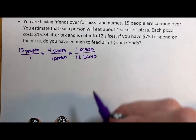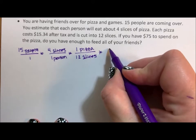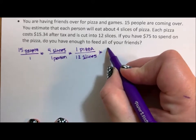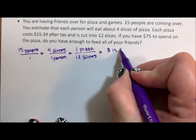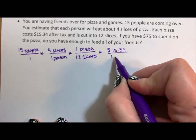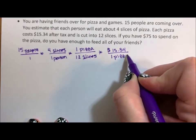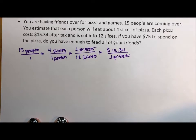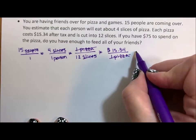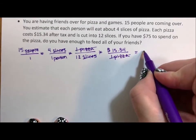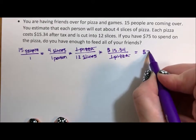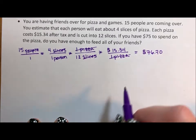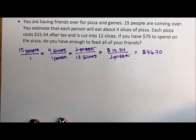What's being asked is: do we have enough money? So we multiply this by the fact that it's going to cost $15.34 for one pizza. We could actually write the whole one pizza number and label everything. If we multiply this out, we find out that we would need $76.70, which means we don't have enough money. But we're close.